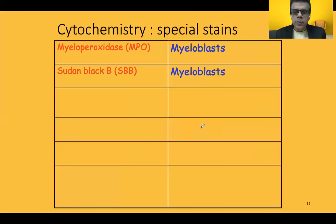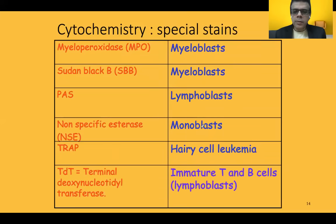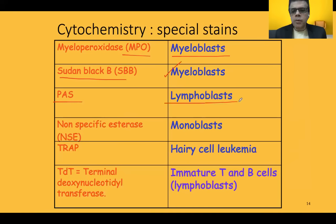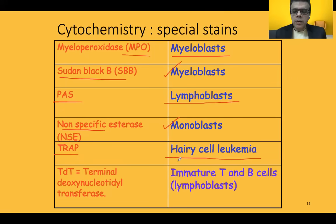Special stains are often asked and very useful in leukemia questions. MPO (myeloperoxidase) is positive for myeloblasts; Sudan black B is also positive in myeloblasts. PAS stain is usually positive in lymphoblasts, typically showing a ring-like positivity pattern. NSE (nonspecific esterase) positivity is characteristically seen in monoblasts — especially in M5 and M4. TRAP (tartrate-resistant acid phosphatase) is positive in hairy cells of hairy cell leukemia. TDT positivity is seen in immature T and B lymphoblasts.